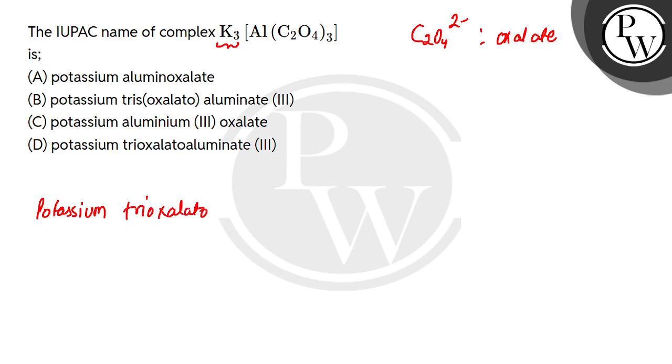Aluminium, because it's part of the anion, it's called aluminate. And what is the oxidation state here? Aluminium plus 3. In Roman numerals.